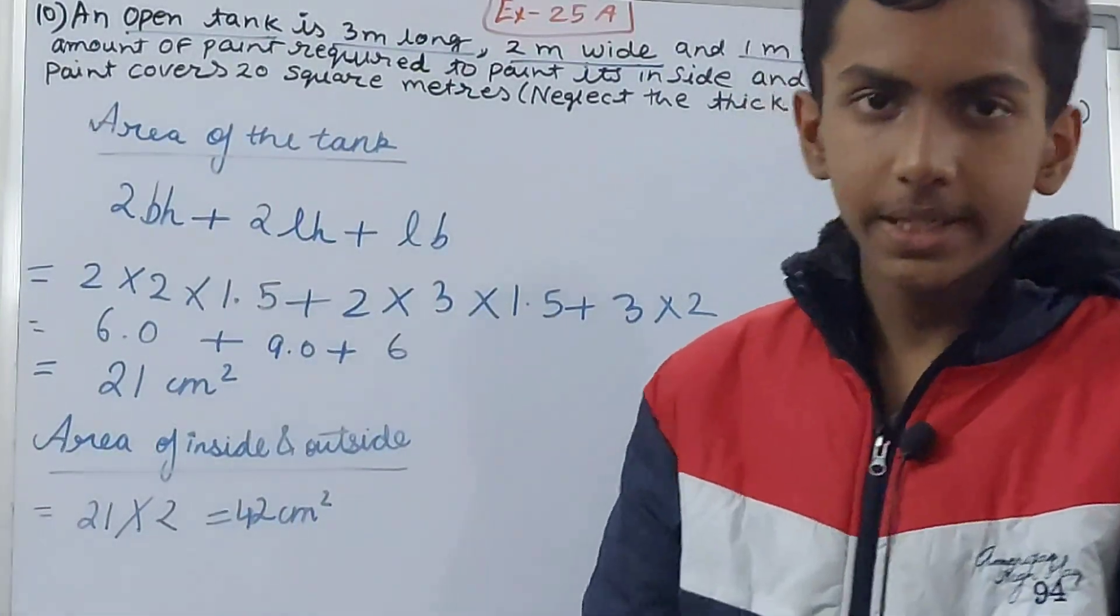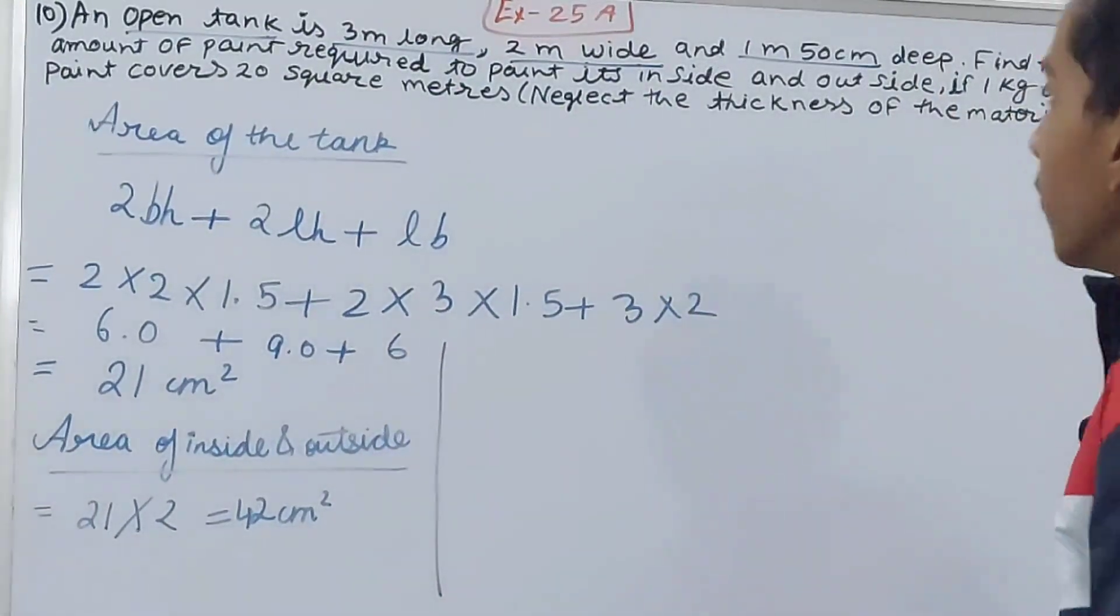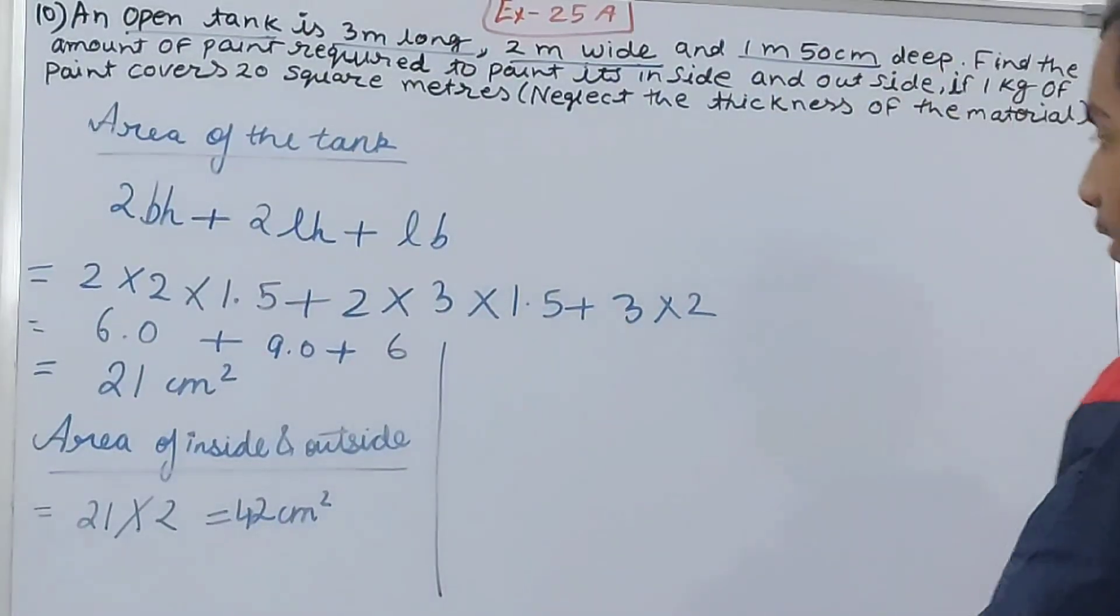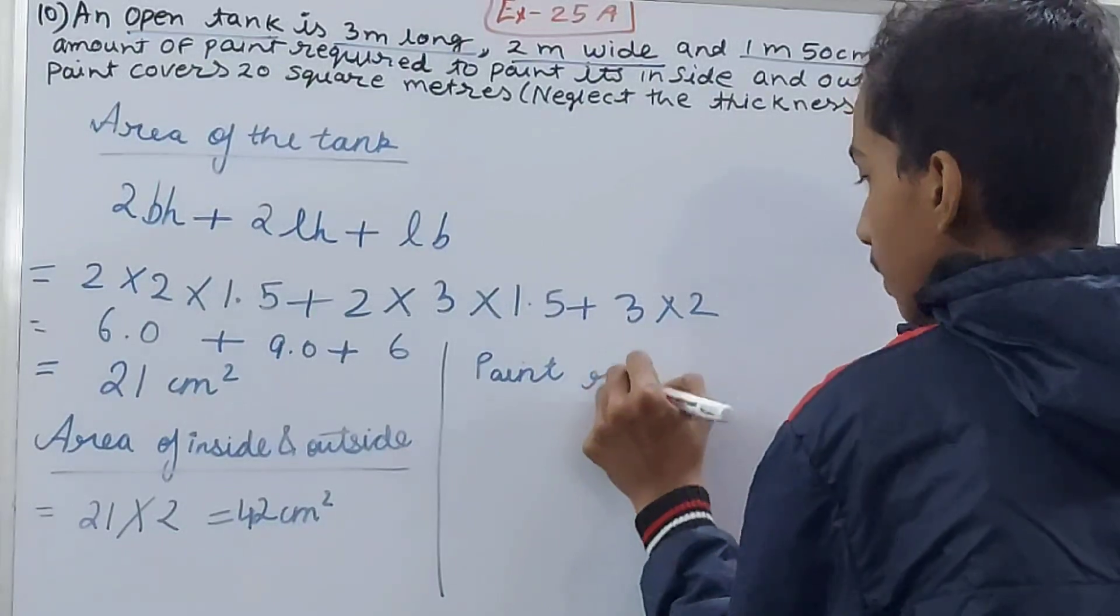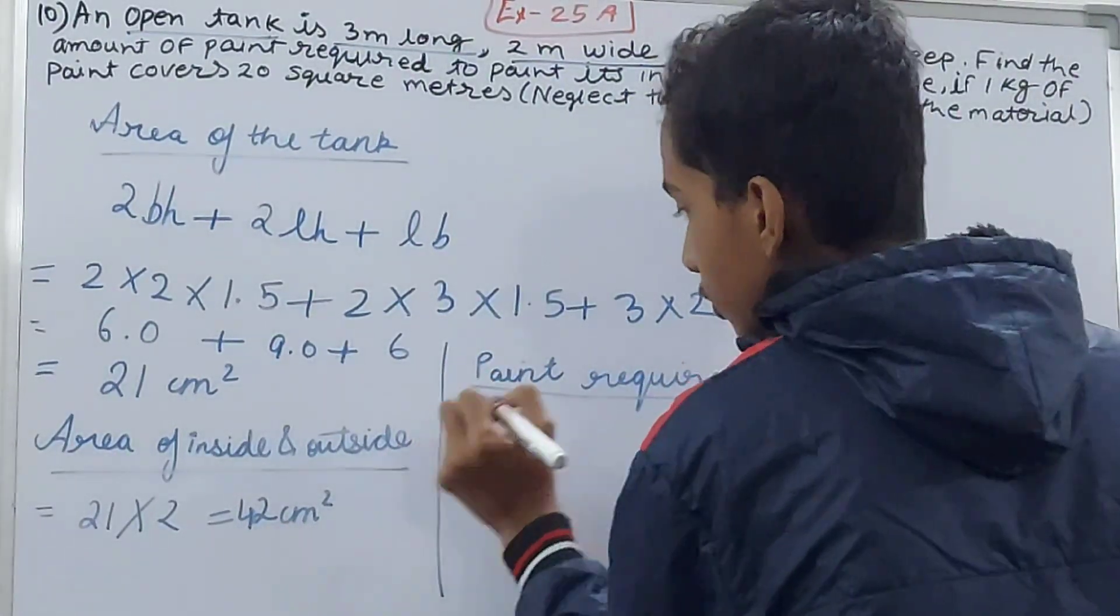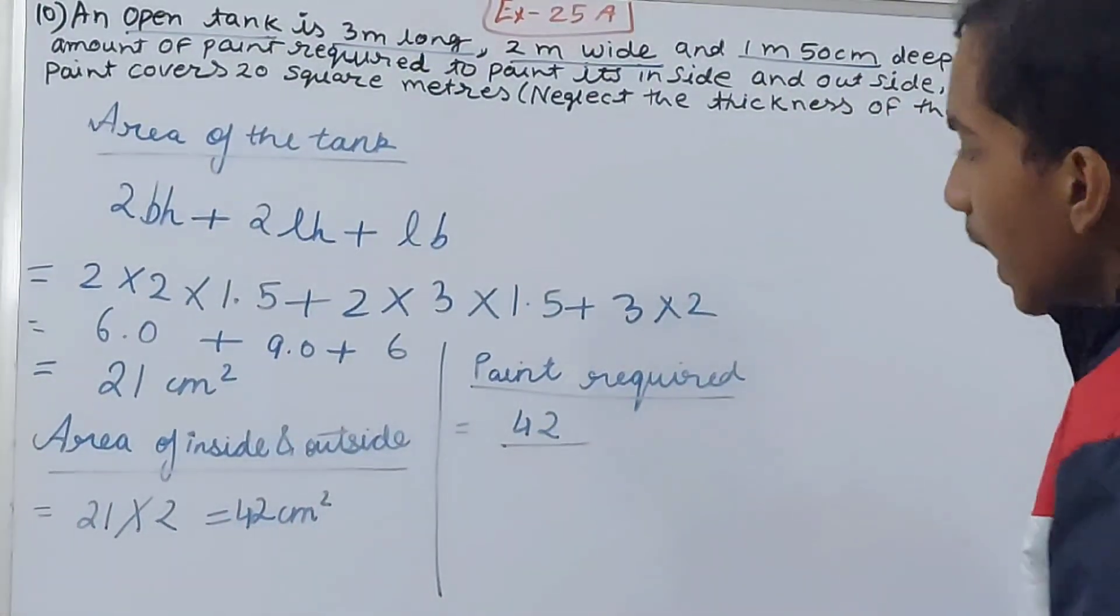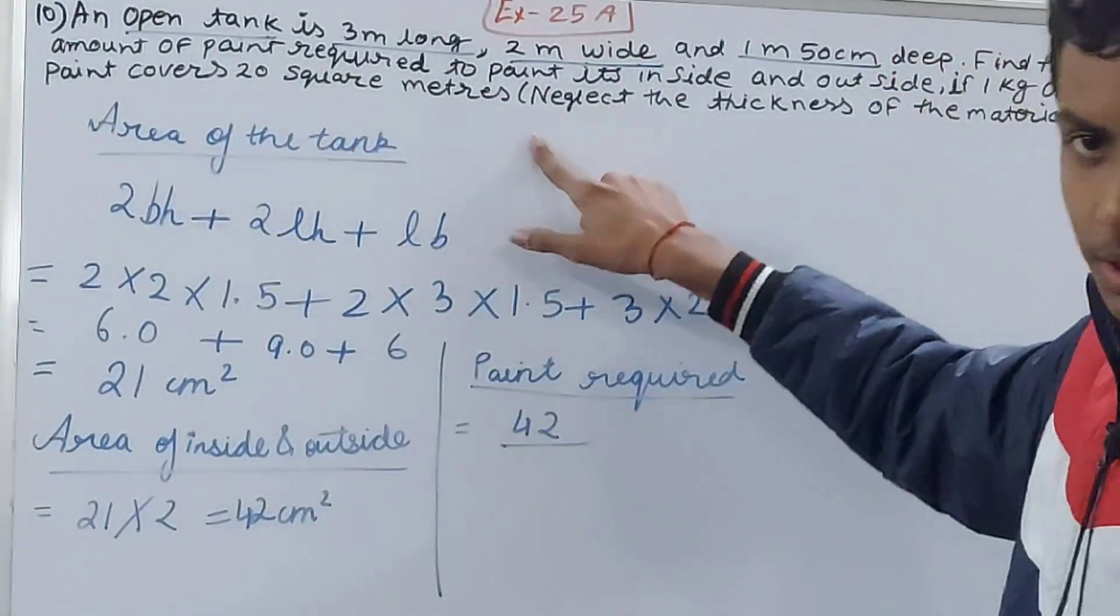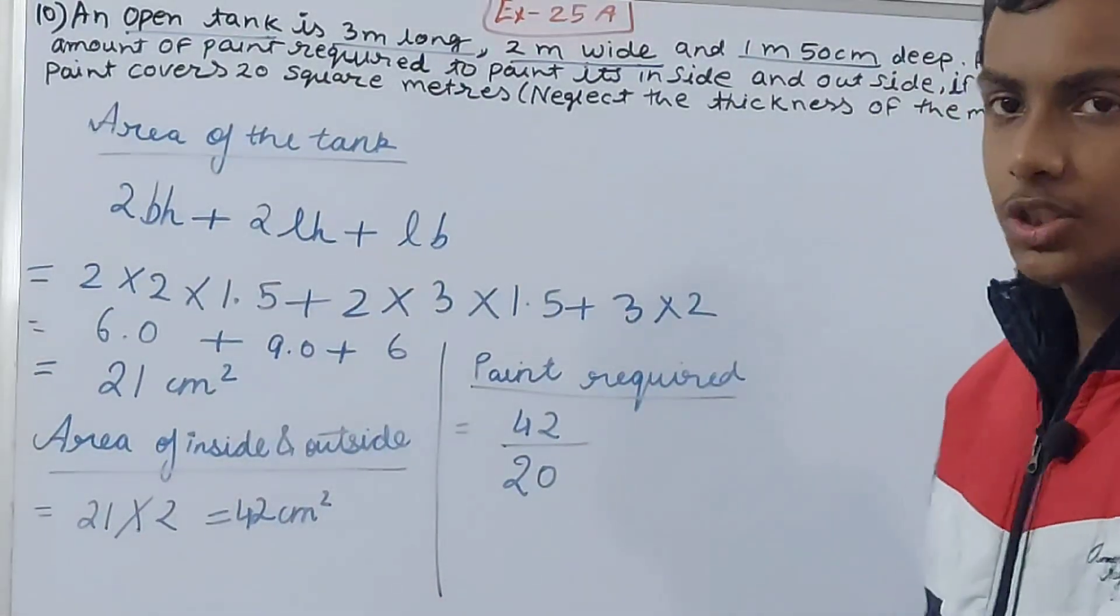Now it is saying that how much paint is required if 1 kg can cover 20 square meters. So paint required - how much will be required? So this is the total area that has to be painted, 42 square centimeters, and 1 kg of paint covers how much? 20 square meters. So 42 upon 20, this will give me how much paint is required to cover 42 square centimeters.